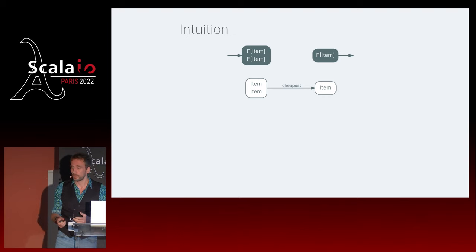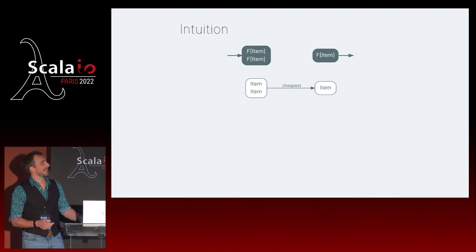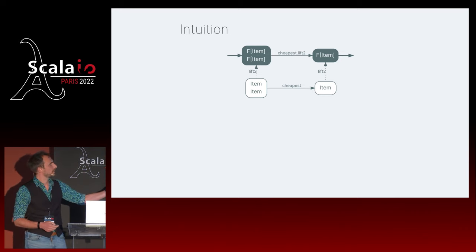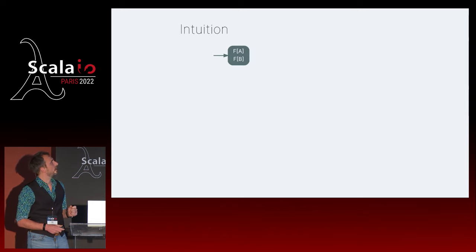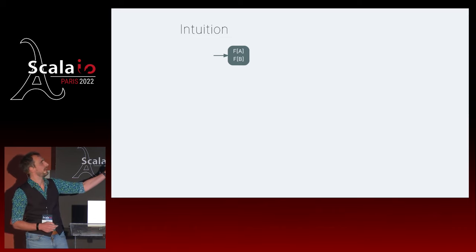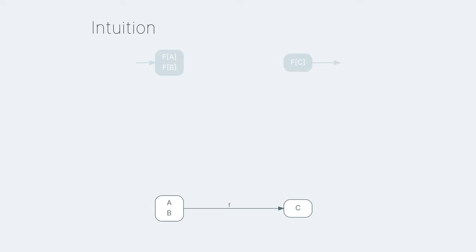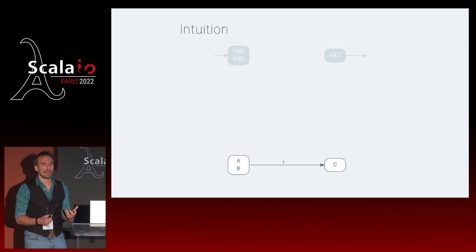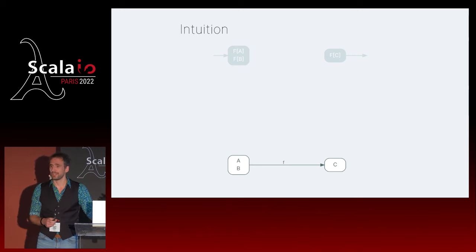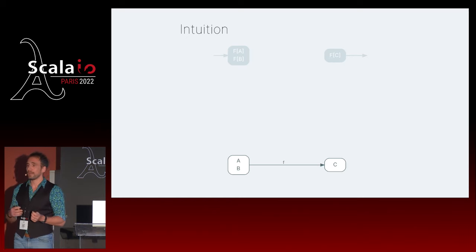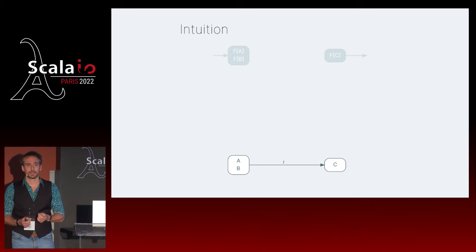When I try to find generic solutions, I make absolutely everything generic. So instead of items we work with abstract types A and B, desired output F of C, and the only tool we have is the function F. We want that diagram to commute - but we have a function that takes two parameters and we only know how to lift a function that takes one. Does anybody know a way of turning a function that takes two parameters into a function that only takes one? Currying - exactly. Currying takes a function of two parameters and returns a function that takes one.